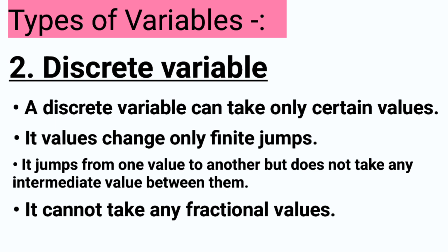In discrete, only certain values are taken — only finite jumps. The values will change like 1, 2, 3, 4, 5, 6 — it will not look at intermediate values. It will jump from one value to another but does not take any intermediate value between them.